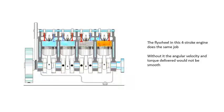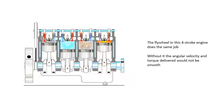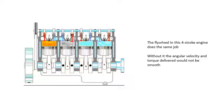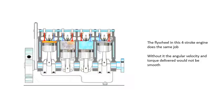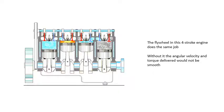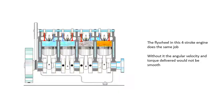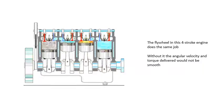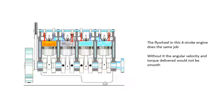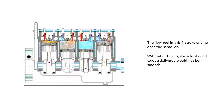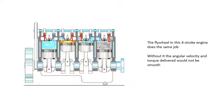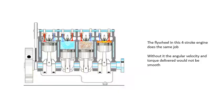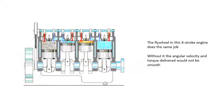I found this animation of a four-stroke engine — I thought it was really good so I put it in the video. You'll see that there's a flywheel doing the same job here. Without it, these explosions — bang, bang, bang — the angular velocity and the torque delivered would not be smooth; it would be very jerky. So the flywheel smooths out the torque and it also makes sure that you get to the next power stroke.